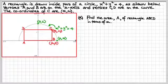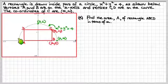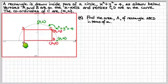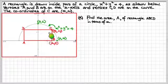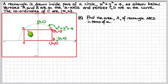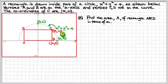A rectangle is drawn inside part of a circle. Here's the rectangle, and here is the part of the circle in green, this semicircle above the x-axis. The circle is x squared plus y squared equals 4, as shown below. The vertices A and B are on the x-axis, and the vertices C and D are on the curve. The coordinates of C are m and n.